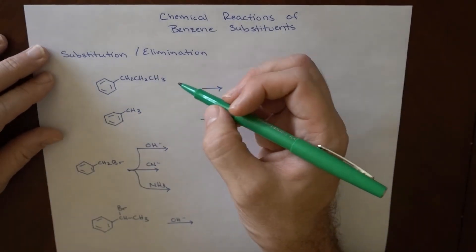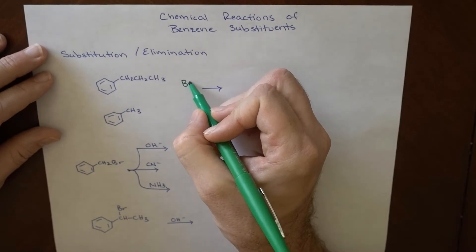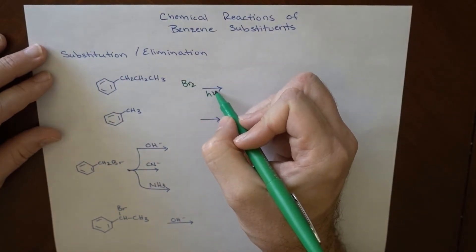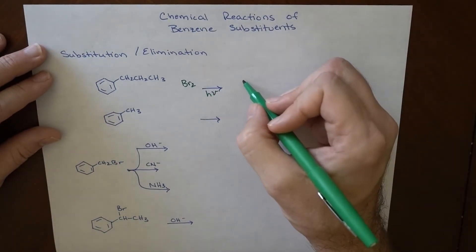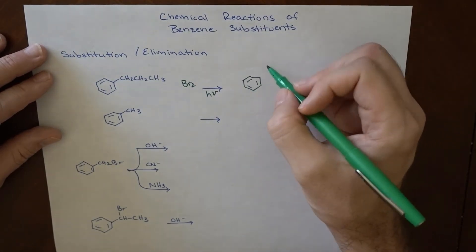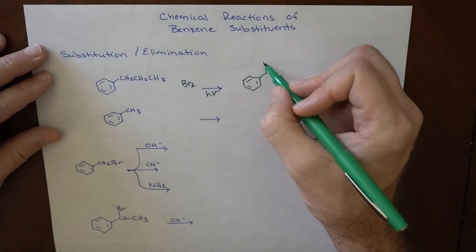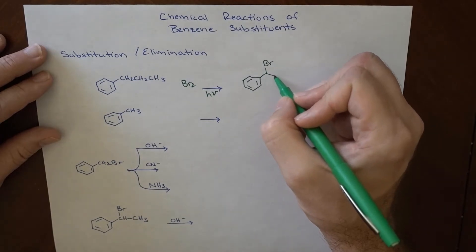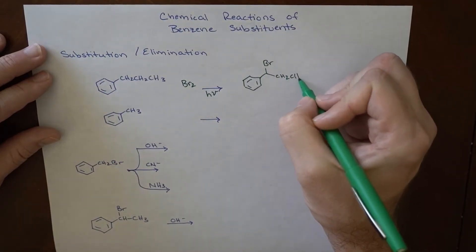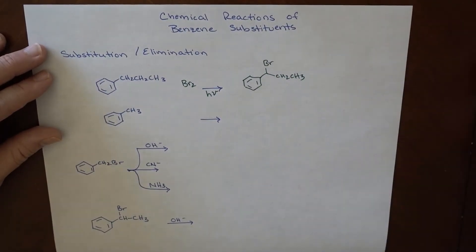So one of the things that we can do is we can brominate this in the presence of light using a radical reaction. This is actually a rather stable thing to do, and we end up adding the bromine right here, so CH2CH3, excuse the abbreviation right there.